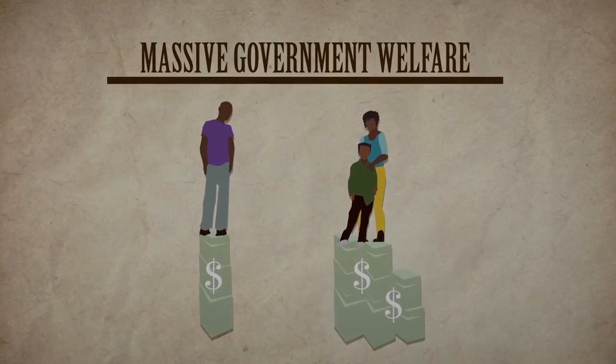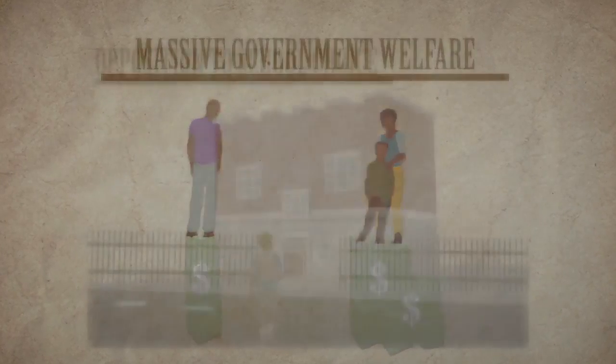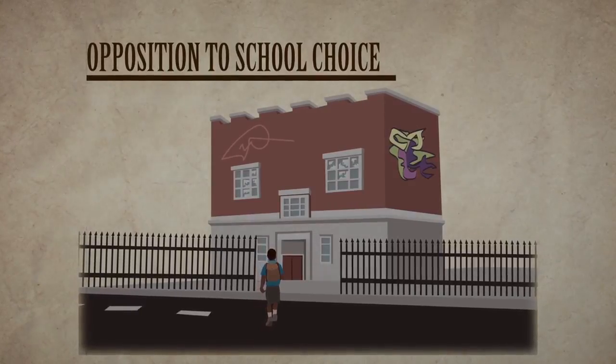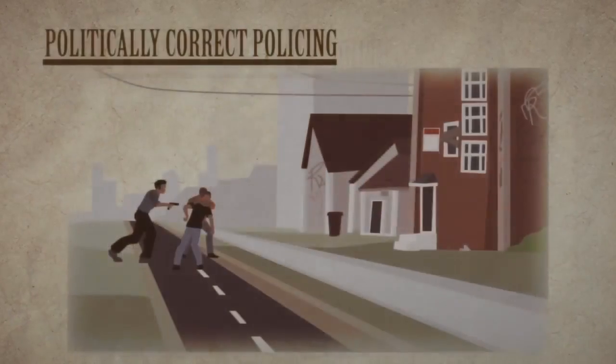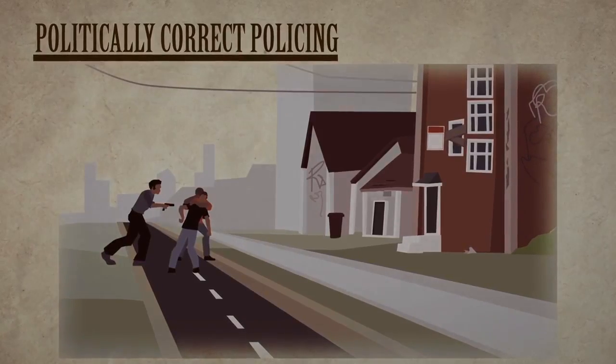Massive government welfare has decimated the black family. Opposition to school choice has kept them trapped in failing schools. Politically correct policing has left black neighborhoods defenseless against violent crime. So when you think about racial equality and civil rights, which political party should come to mind? I'm Carol Swain, Professor of Political Science and Law at Vanderbilt University for Prager University.